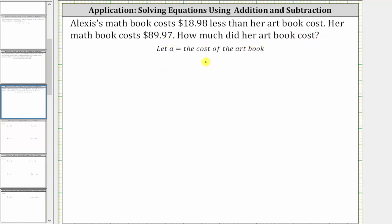We'll let the variable a equal the cost of the art book. Because the math book cost $18.98 less than the art book, this also tells us the art book is $18.98 more expensive than the math book.